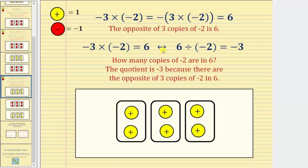The corresponding quotient is positive 6 divided by negative 2 equals negative 3. 6 divided by negative 2 is asking: how many copies of negative 2 are in positive 6? The quotient is negative 3, and again we view this as the opposite of 3, because there are the opposite of 3 copies of negative 2 in positive 6.